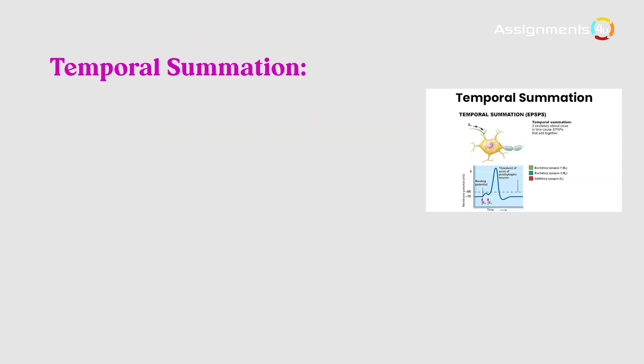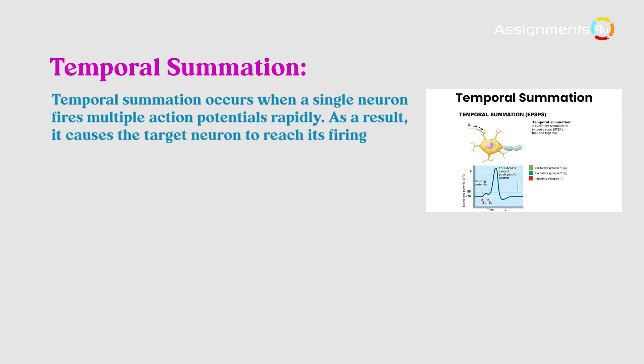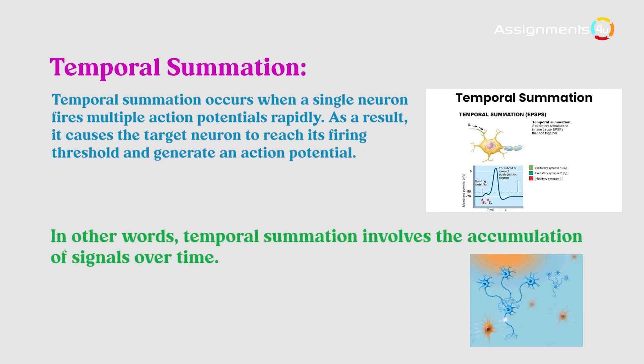Temporal summation occurs when a single neuron fires multiple action potentials rapidly. As a result, it causes the target neuron to reach its firing threshold and generate an action potential. In other words, temporal summation involves the accumulation of signals over time.